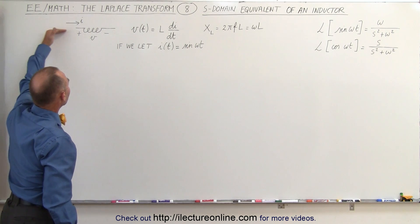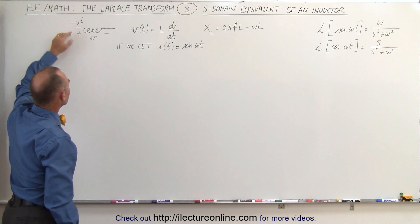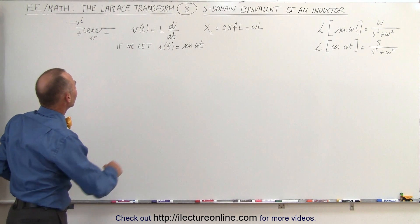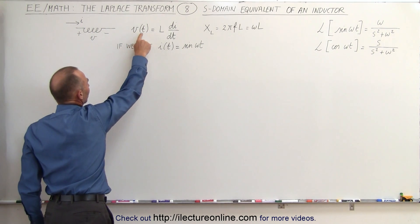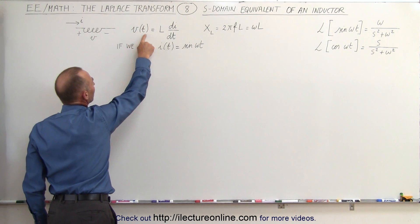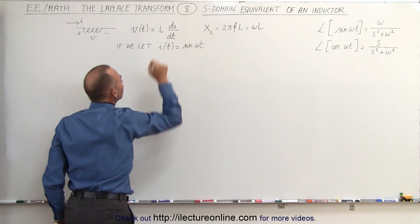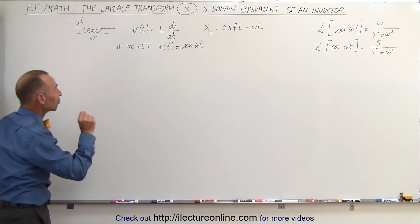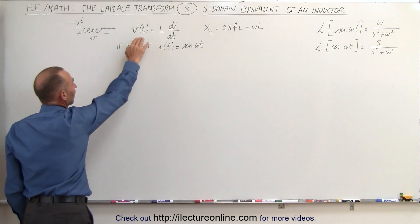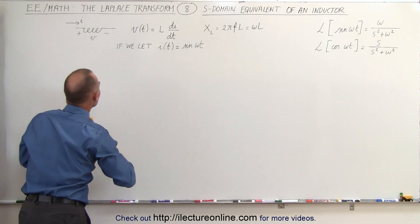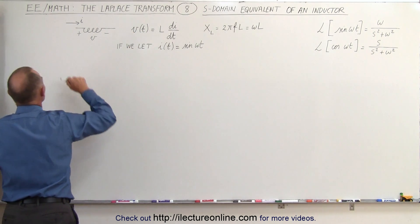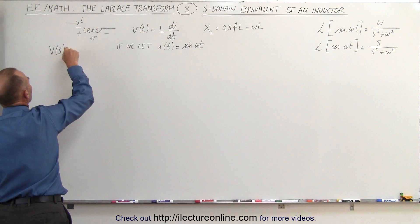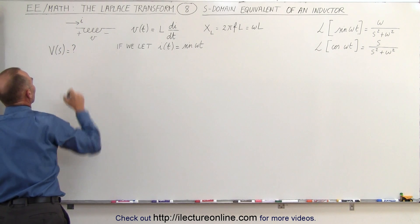If we have a current I going through the inductor and a voltage V across the inductor, we can say that the voltage across the inductor as a function of time can be written as L times di/dt. What we're going to do now is find the Laplace transform of that function — we're going to find V of S.